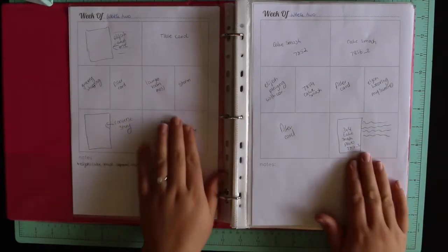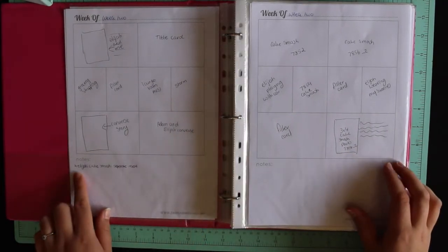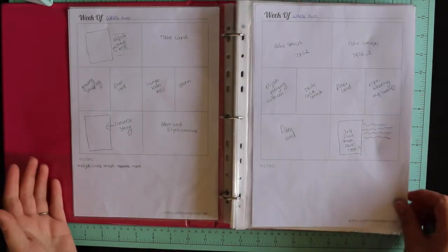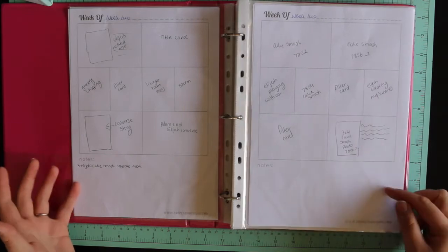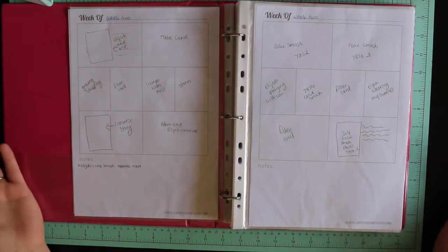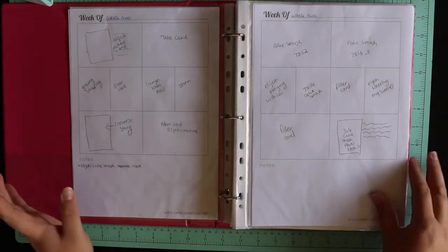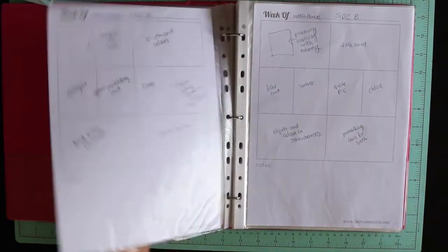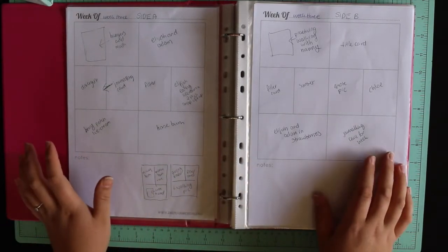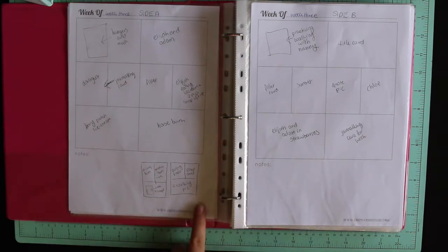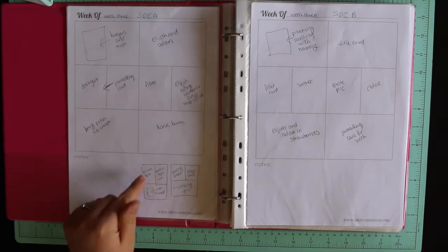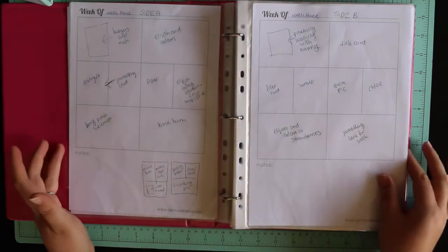So for week two, I've got this all planned out. These photos are printed and I've got in the notes at the bottom, Elisha's cake smash separate insert because my son had his cake smash photo shoot. But in the end, I think I may have decided just to put a couple in there because I didn't want the album to be predominantly my son because he has his own album as well.